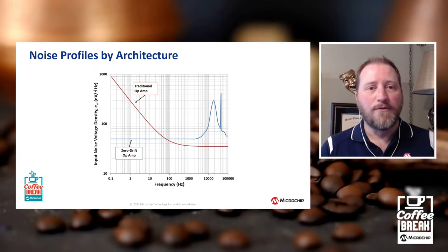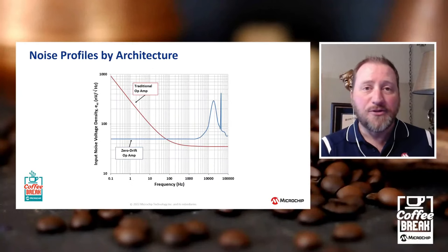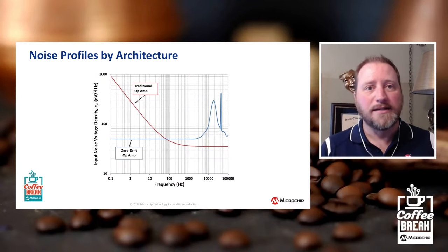Another design consideration is the noise profile. What do we need to know about the noise profile in the frequency domain between the two architectures? Looking at typical noise profiles, for a traditional operational amplifier shown in red, there are two main regions. Out in frequency, you have the white noise of the amplifier, which is relatively flat over frequency. At low frequency, you have what's known as 1/f, or flicker noise, which becomes the dominant noise source. This rises at about 20 dB per octave and is inherent to all electronics. Where it really becomes problematic is if you have a low-level input signal — meaning low amplitude and low frequency — where this 1/f noise is dominant, making it very difficult to extract that signal.